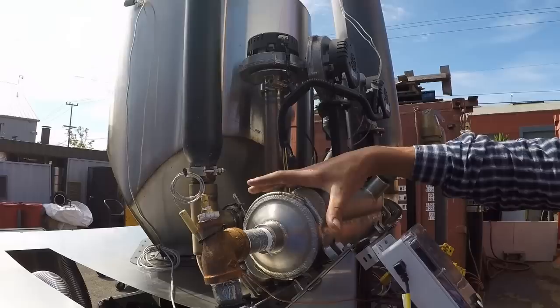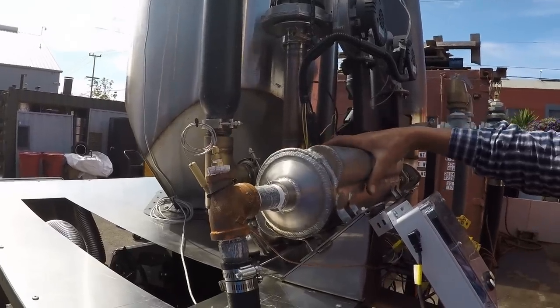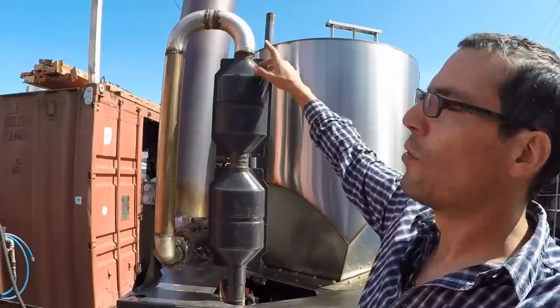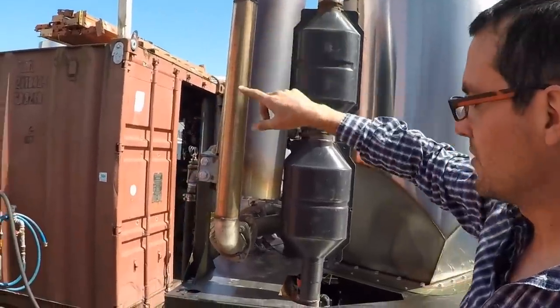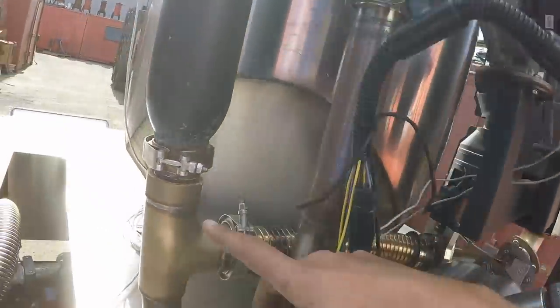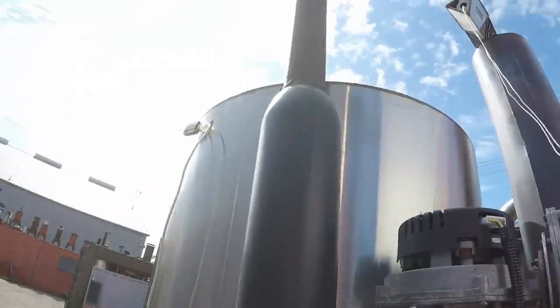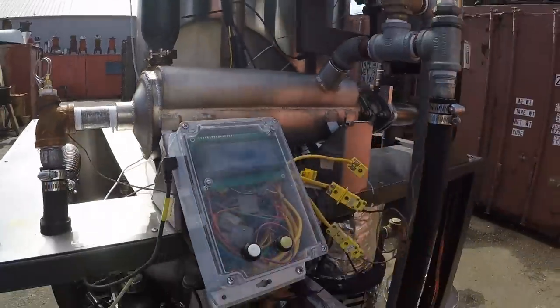In this heat exchanger the water is on the outside and through the middle the exhaust gas passes. And then the exhaust gas comes out of the heat exchanger and out of the exhaust stack.